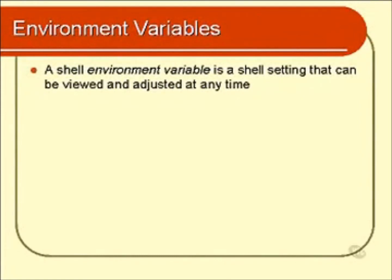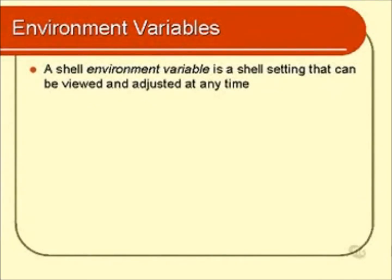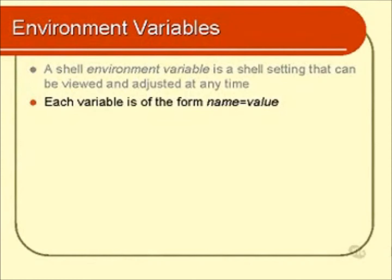If you're a programmer, you probably have some idea of what a variable is. If you're not, it doesn't really matter — we'll find out right now. Each variable is of the form name equals value. What that means is that each variable has a particular name, and each variable also has a particular value.